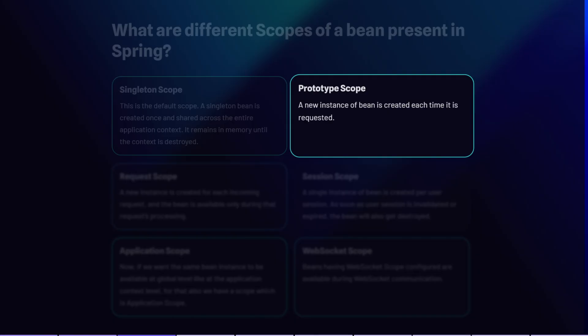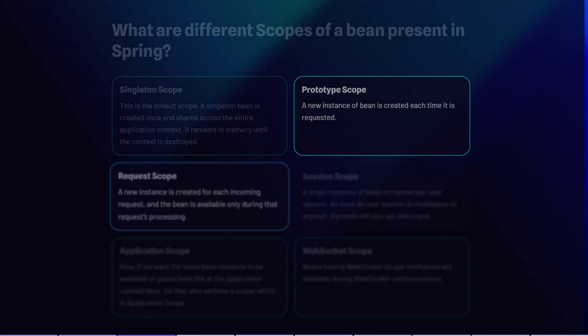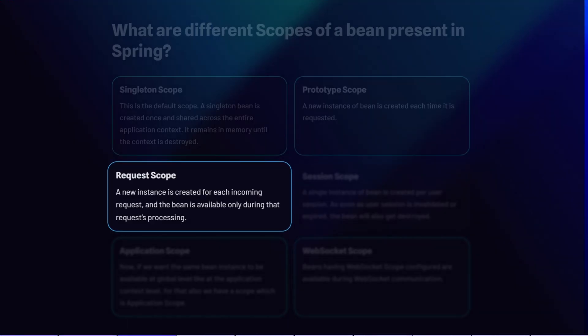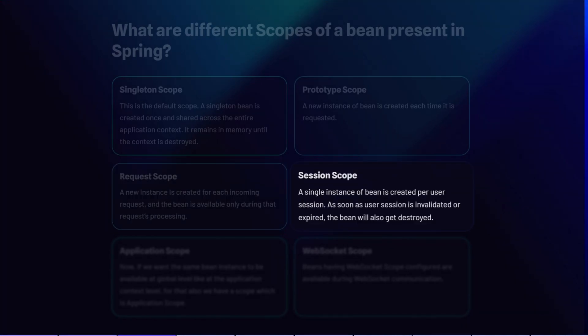Next we have prototype scope — a new instance of the bean is created every time it is requested. These beans are not shared and are suitable for stateful components. Then we have request scope, where a new instance of the bean is created for each incoming HTTP request and is available only during that request's processing.